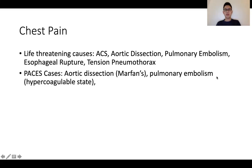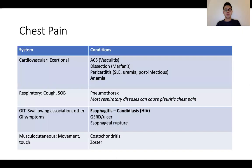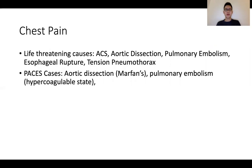For chest pain, a quick recap of life-threatening causes: this would include acute coronary syndromes, aortic dissection, pulmonary embolism, esophageal rupture, as well as tension pneumothorax. It is always important to ensure that red flags are adequately addressed in any PACES station 2 or 5 exam. Some of the more PACES-unique cases would be, in the context of suspected dissection, to consider underlying Marfan's syndrome. For pulmonary embolism, hypercoagulable states are something to consider. Likewise, tension pneumothorax can also occur in Marfan's.